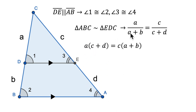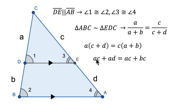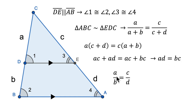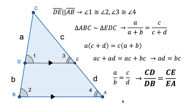So A times (C plus D) equals (A plus B) times C. Distributing A gives us AC and AD; distributing C also gives AC and BC. You might notice that AC cancels out — subtracting AC from both sides leaves AD equals BC. Rearranging: divide both sides by B and by D, and you get A over B equals C over D. Now A is CD, and B is DB, so the ratio of CD to DB equals CE to EA. And that's our side splitter theorem — proved!